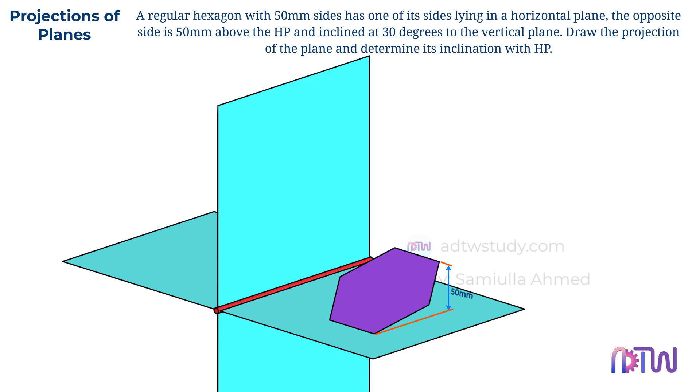Next, it is also mentioned that this hexagonal plane is inclined at 30 degrees to the vertical plane, which is like this. This is how the hexagonal plane is resting in three-dimensional space.